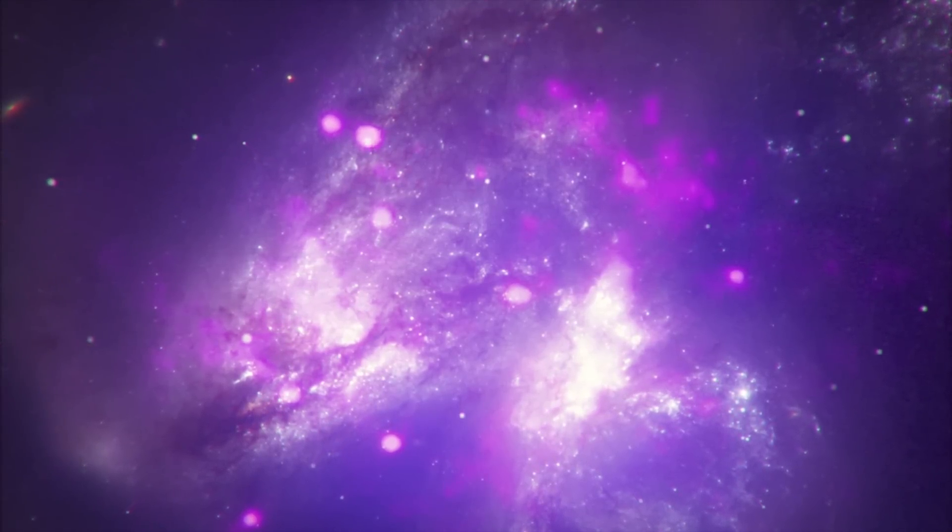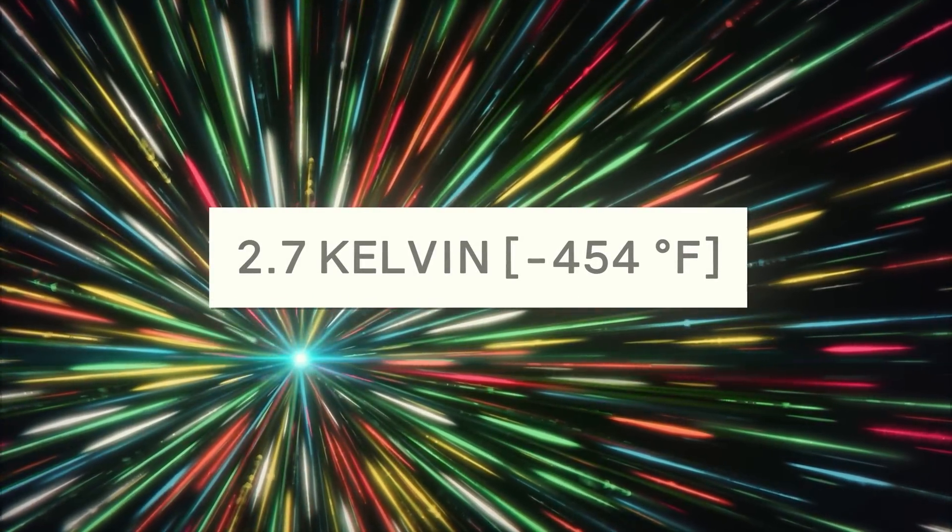Only then did matter begin to spread randomly throughout space. We know this because of relic radiation that emerged after the Big Bang. This is called cosmic microwave radiation, which permeates space in all directions.